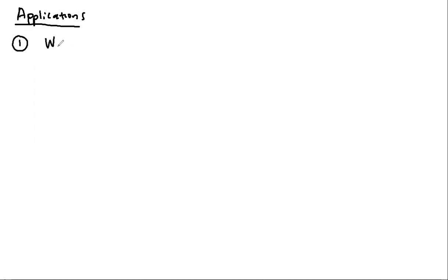The first application is to characteristic classes of manifold bundles. Let me introduce notation: W_{g,4k} are manifolds which are connect sums of products of even-dimensional spheres. If this was S^1 times S^1, then this would just be a genus g surface.